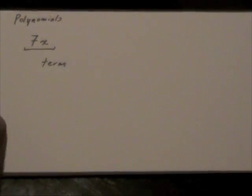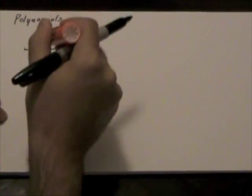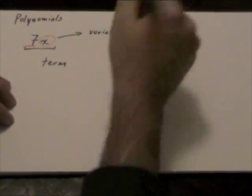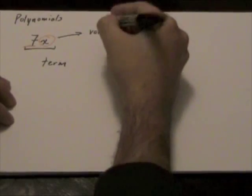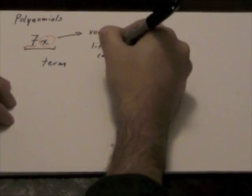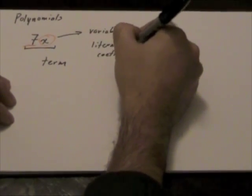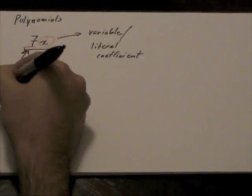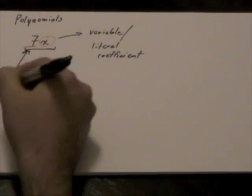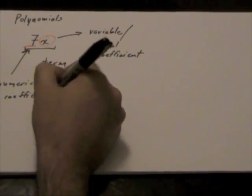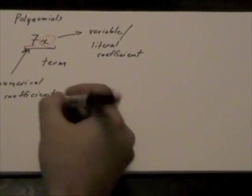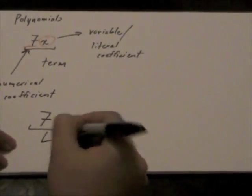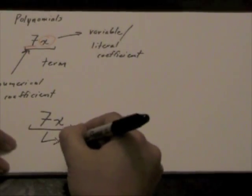Here we have what we call a term. And in this term, there are two parts. We have our letter, which is known as a variable, or it is also known as a literal coefficient. The number that's in front of it is considered a numerical coefficient. Whenever you have a numerical coefficient followed by a literal coefficient, the function that is being done between the two is multiplication.